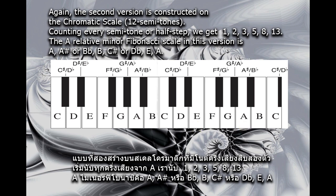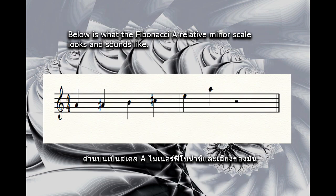The A-relative minor Fibonacci scale in this version is A, A-sharp or B-flat, B, C-sharp or D-flat, E, A. Below is what the Fibonacci A-relative minor scale looks and sounds like.